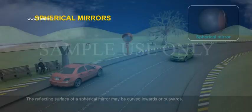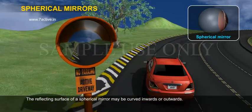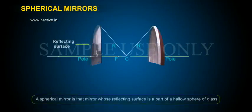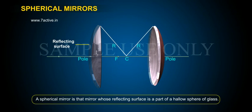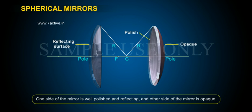Spherical mirrors. The reflecting surface of a spherical mirror may be curved inwards or outwards. A spherical mirror is that mirror whose reflecting surface is a part of a hollow sphere of glass. One side of the mirror is well polished and reflecting, and another side of the mirror is opaque.